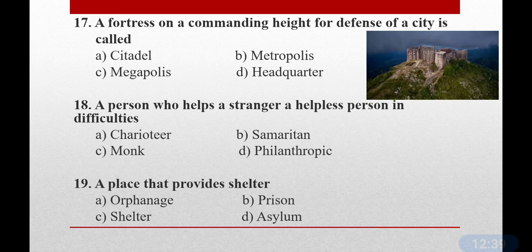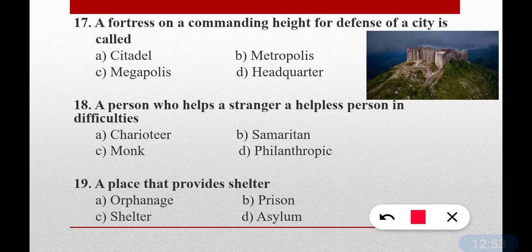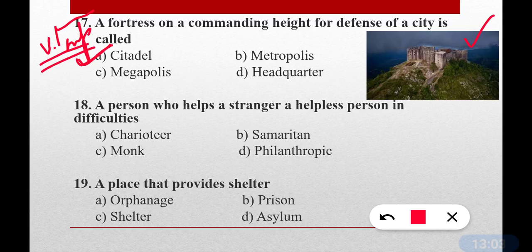Question number seventeen: A fortress on a commanding height for defense of a city. This type of fort built on a height is known as a citadel — option A is correct. This is very important. MNS exams ask very interesting one word substitutions. The answer is citadel.